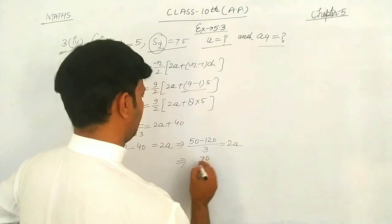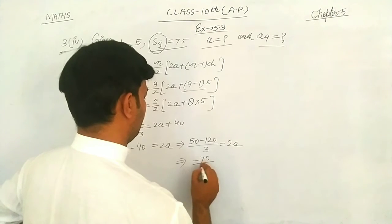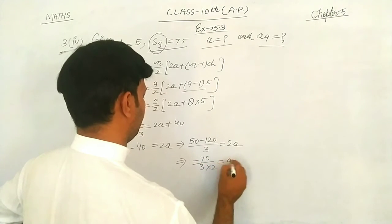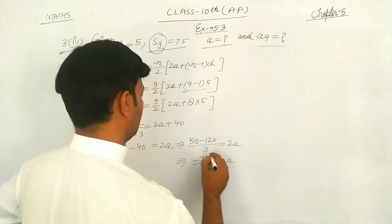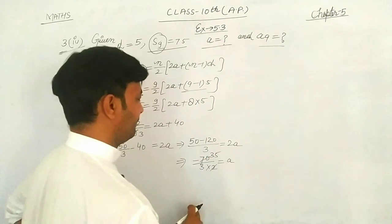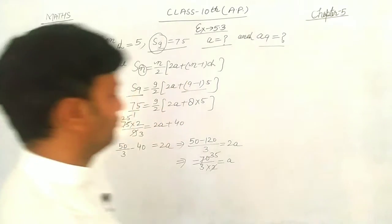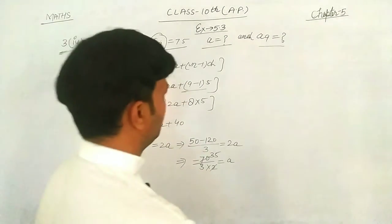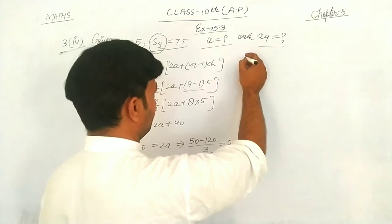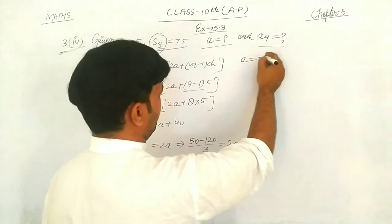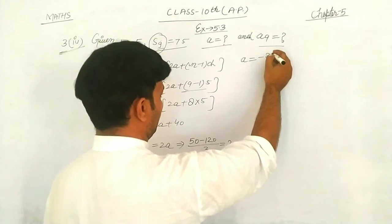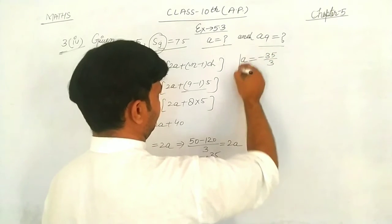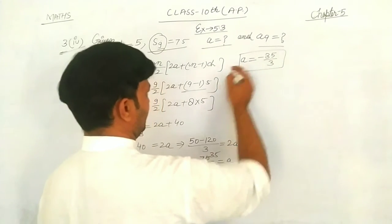So we get negative 70 over 3 equals 2a. Dividing both sides by 2, a equals negative 35 over 3. That is our first answer.